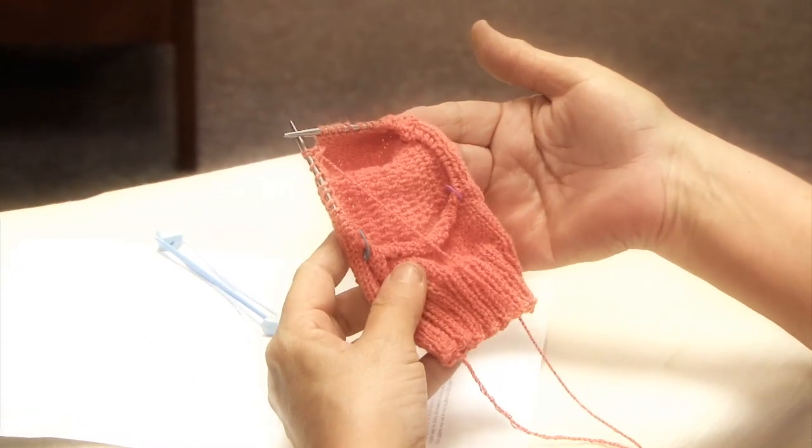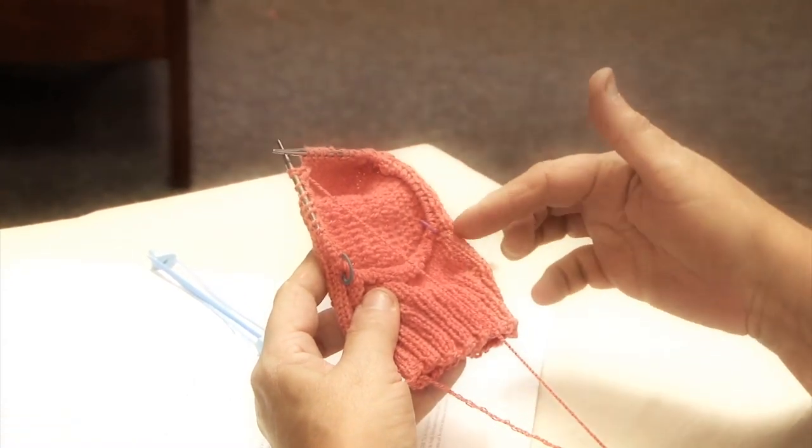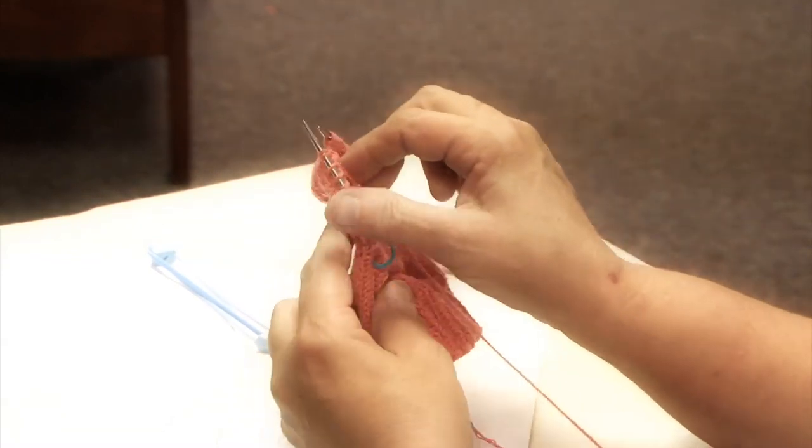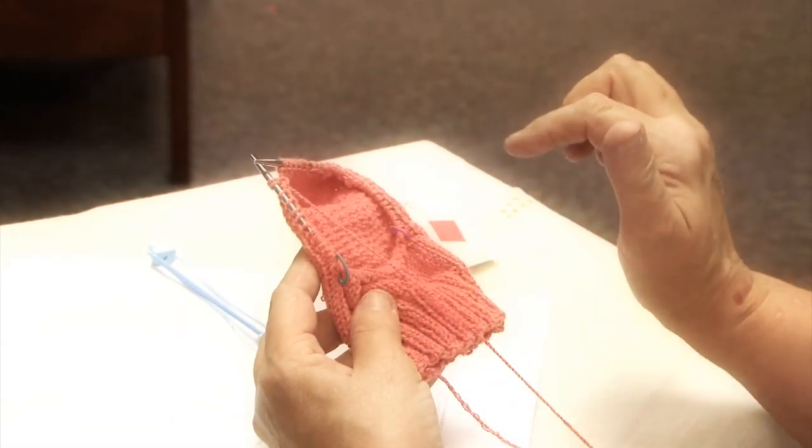But we have to complete this round, which means we have to continue to knit all the way over here to our gold marker, which is going to be our blue one today. So I'm going to knit around the circle, and I'll meet you right back there.